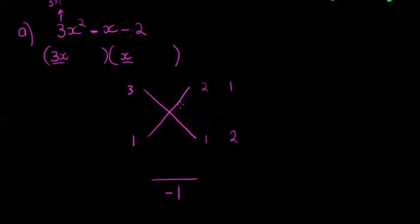So let's see: 3 times 1 gives me 3, and 1 times 2 gives me 2. Indeed, when I subtract these two, if it was negative 3 and positive 2, I would get negative 1.